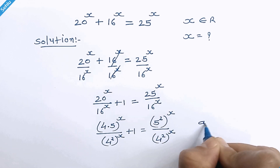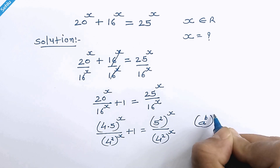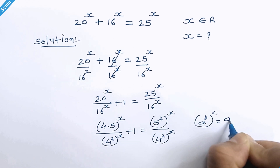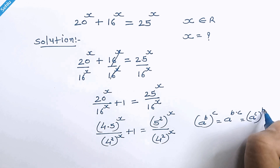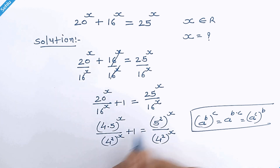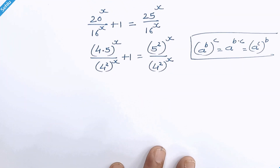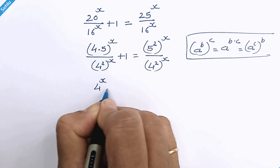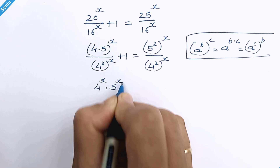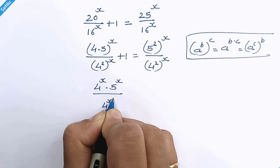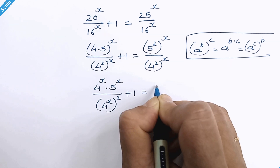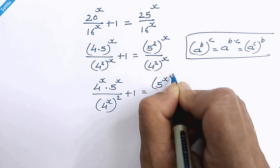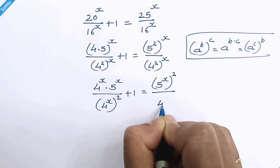Now, as per the rule, when we have a raised to b, whole raised to c, it can be written as a raised to b times c. Using this rule, we can write: 4 raised to x times 5 raised to x, over 4 raised to x squared, plus 1, is equal to 5 raised to x squared, over 4 raised to x squared.